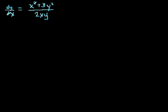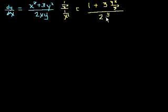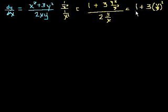So if we just multiply by 1 over x squared over 1 over x squared — we're essentially just multiplying by 1 — we get 1 plus 3y squared over x squared, divided by... if you divide x by x squared, you just get 1 over x. So 2 times y over x.